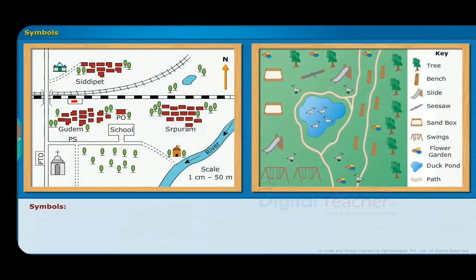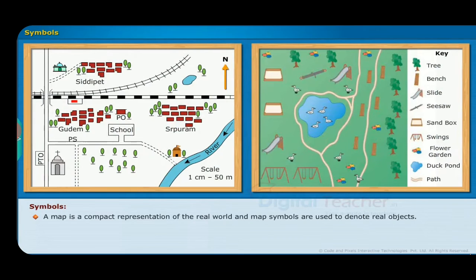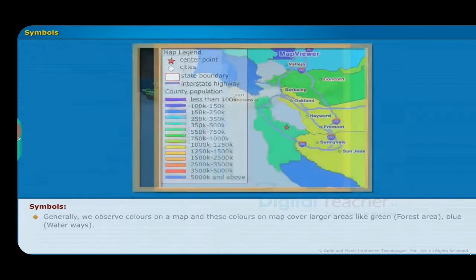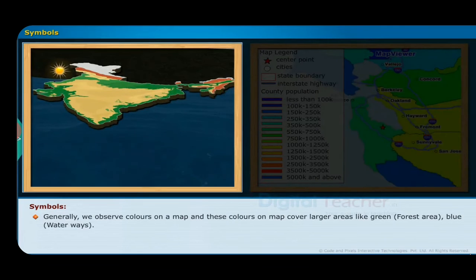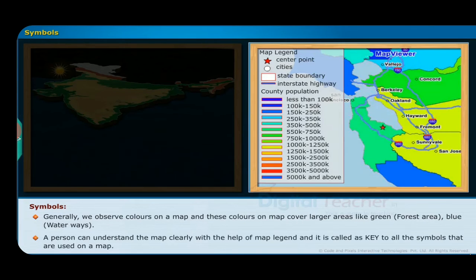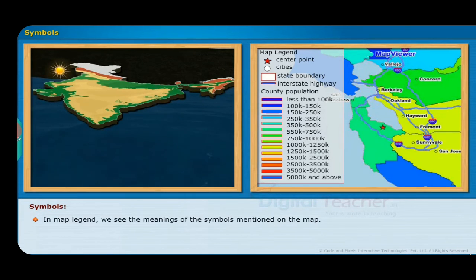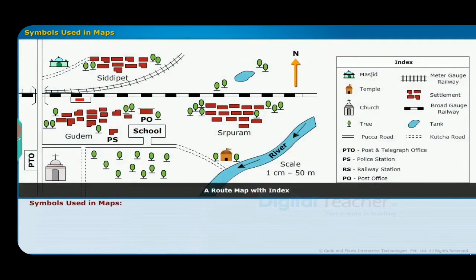Let us learn about symbols briefly. A map is a compact representation of the real world, and map symbols are used to denote real objects. Both shapes and colors are used for symbols on maps to identify or denote things easily. Colors on a map cover larger areas — for example, green for forest area and blue for waterways. A person can understand the map clearly with the help of a map legend, which is the key to all the symbols used on a map. In the map legend, we see the meanings of all the symbols mentioned on the map.